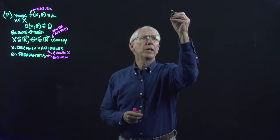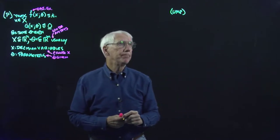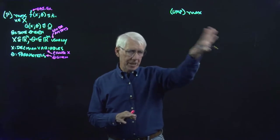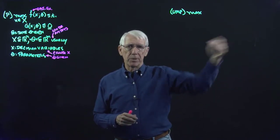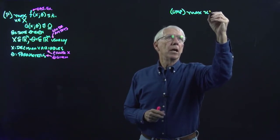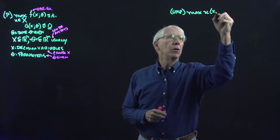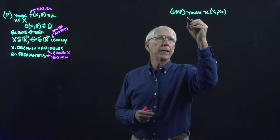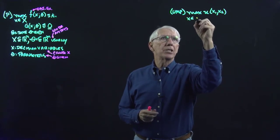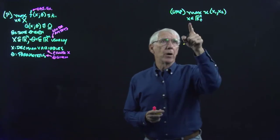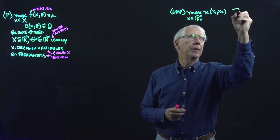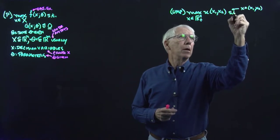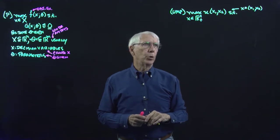Let's say we have the utility maximization problem, where the consumer chooses a bundle of goods. We'll do this for just two goods so we can draw a picture. The consumer is maximizing utility function u(x1, x2), subject to x in R2-plus — so x equals (x1, x2) — and we model the consumer as choosing this bundle subject to a budget constraint: p1*x1 + p2*x2 less than or equal to M.